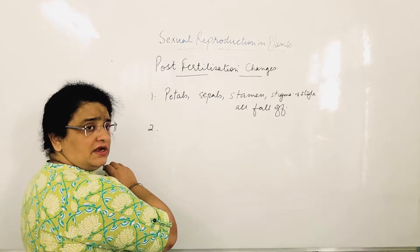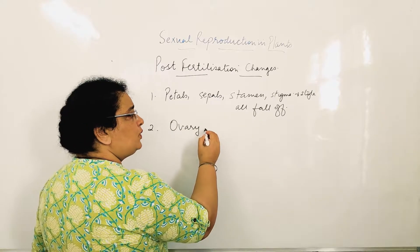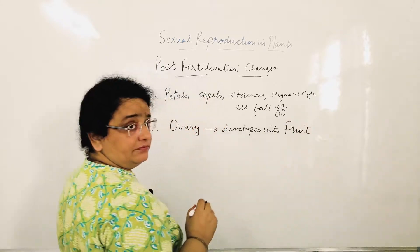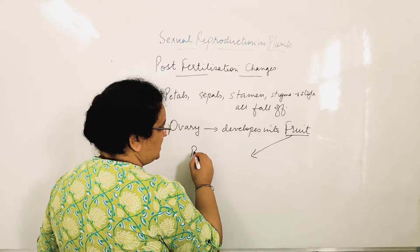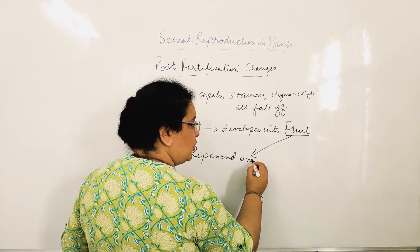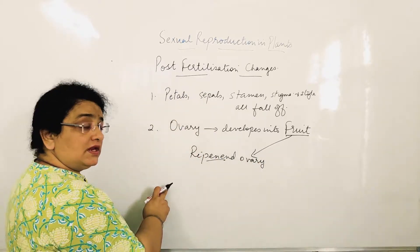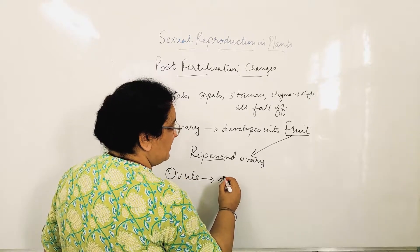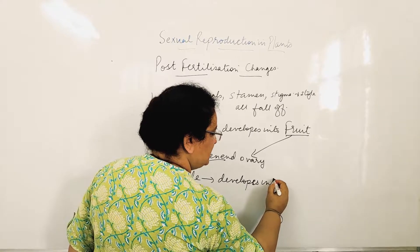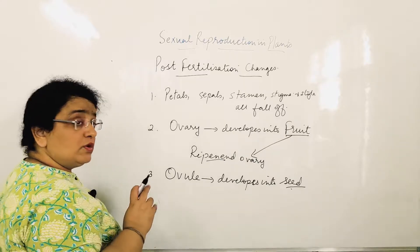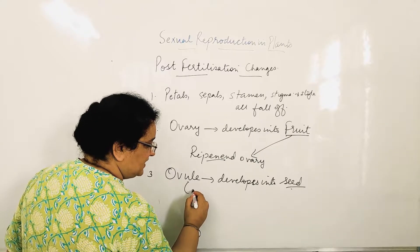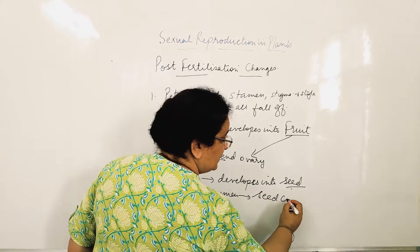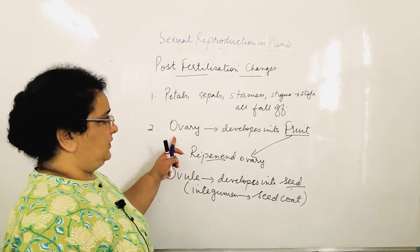After that, the ovary develops into fruit. So what is a fruit? Fruit is nothing but the ripened — that is, matured — ovary. And what was inside the ovary? Inside the ovary was the ovule. And the ovule develops into seed. The integument of the ovule changes into the seed covering, that is known as the seed coat.